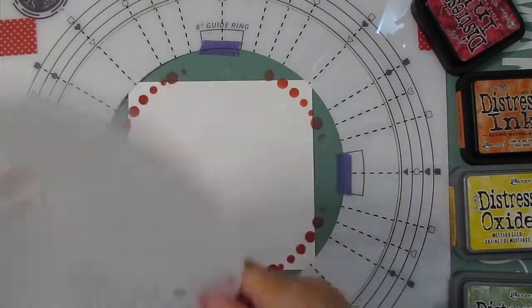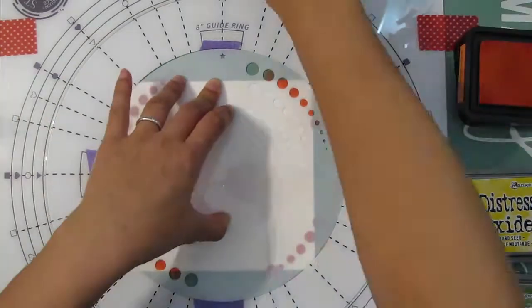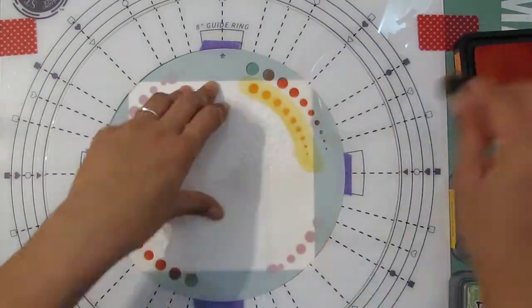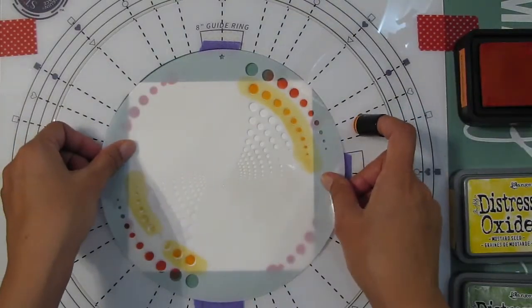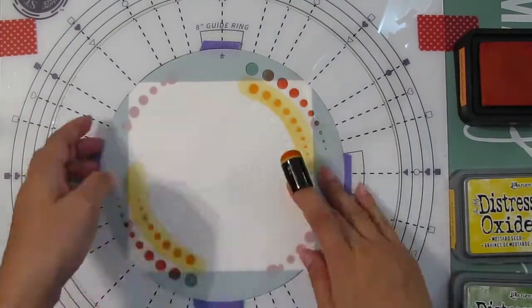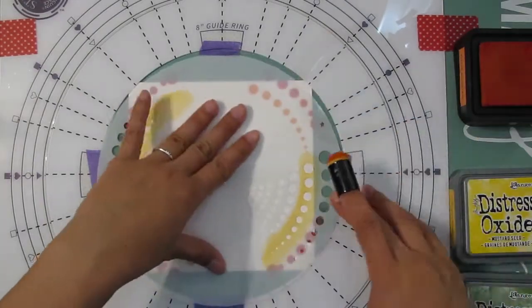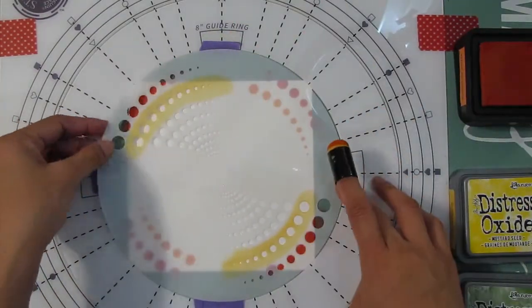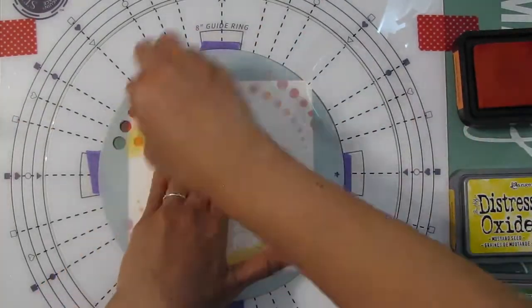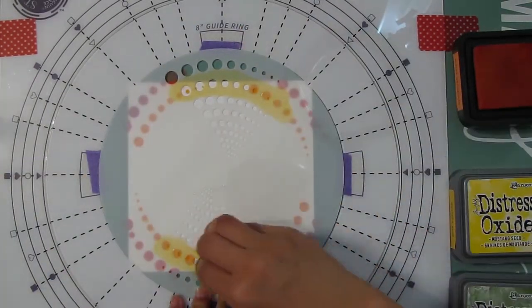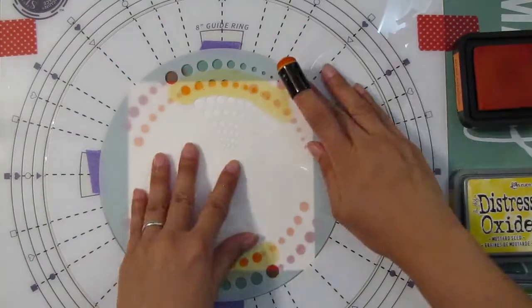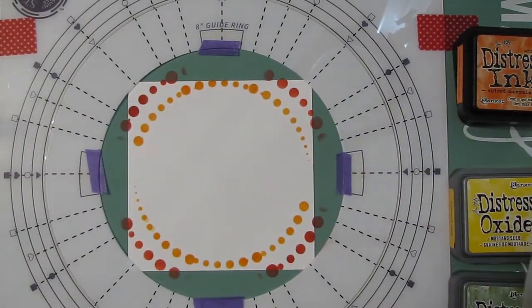I'm using these finger daubers for the ink application. I find that for more small detailed stencils, I like the smaller applicator. I get a more precise application. Here I'm just going around in a circle, and I'm glad that I can see through the stencil so I can see where I'm applying the ink.